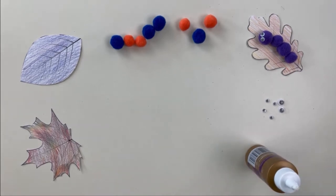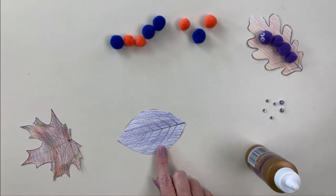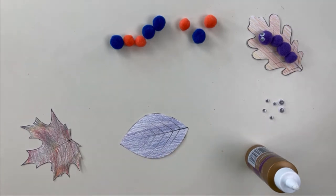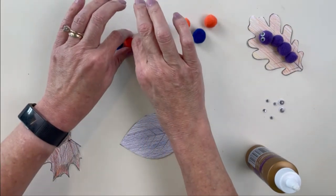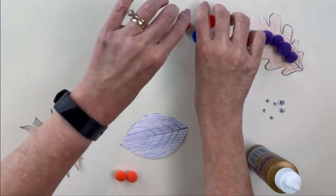So are you ready to get started? All right, we are going to take our leaf and we're going to pick out what color pom-poms we're going to use, and I think I'm going to use orange. So let's pull out four orange pom-poms.